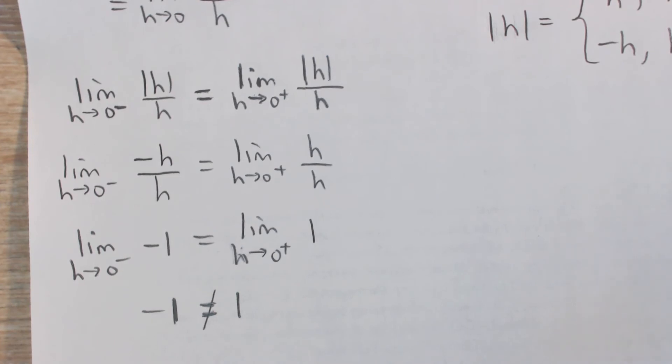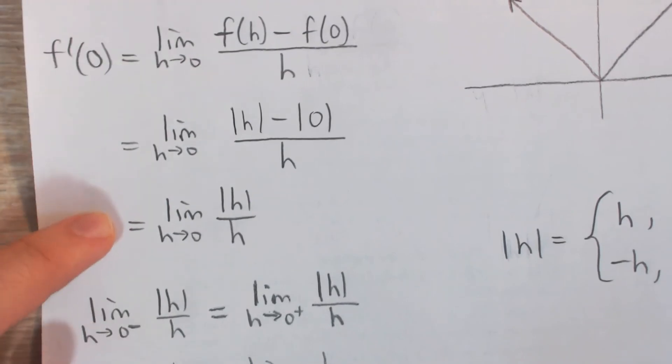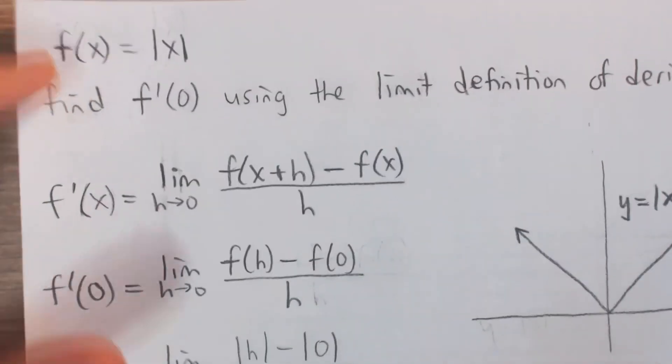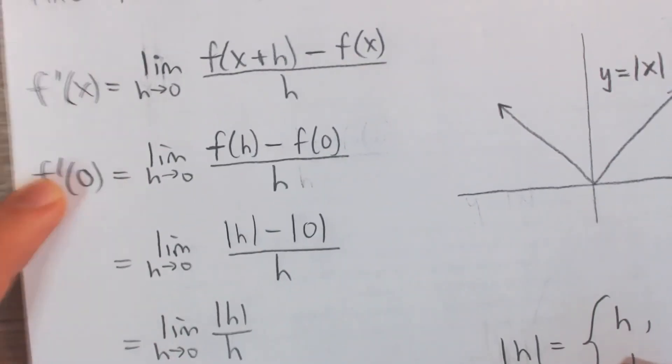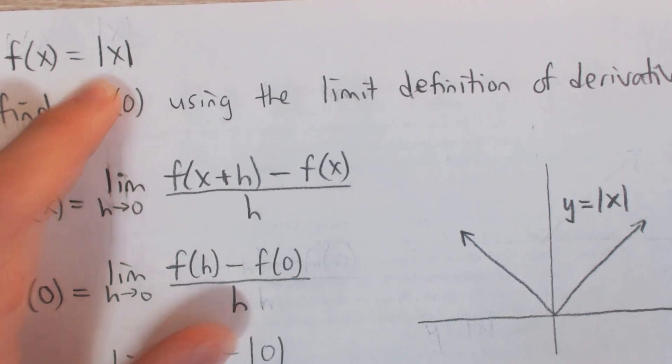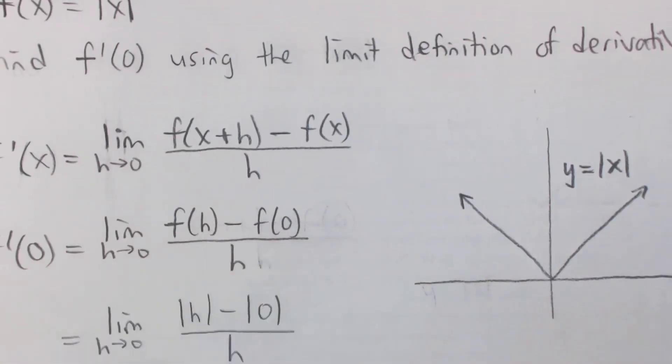From the right it's 1, and from the left it's negative 1. And so that means that our original limit here does not exist. And so we say, because this limit does not exist, the derivative at 0 does not exist. And so we say that f, the absolute value of x, is not differentiable at x equals 0. There is no slope, no way to determine the slope at 0.